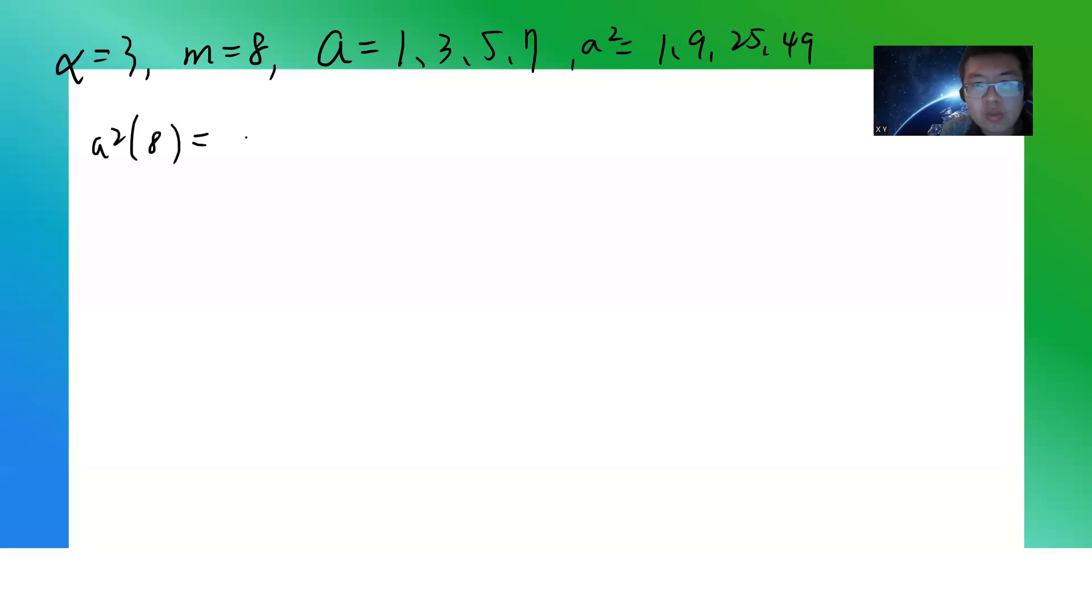So this tells you that a² ≡ 1 (mod 8). Okay, but we know that φ(8) = 4, which is twice 2. So there's no primitive roots.